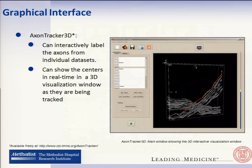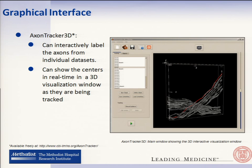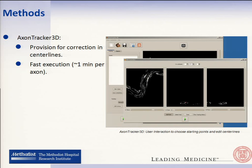Here you can see the interface for Axon Tracker 3D. There is a render window where as soon as the user loads the data, it is shown in 3D, and you can see all the axons have been traced. The user can actually visualize the tracking process as it is going on, and if there is any problem, can stop it at any point and correct it. This can also be visualized using cross-sectional views, where the user can correct, delete, add, or verify the tracking process, and can play back the whole tracking process to check if it is correct.